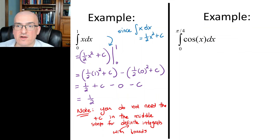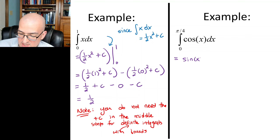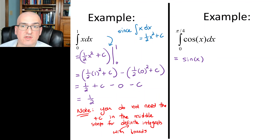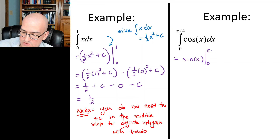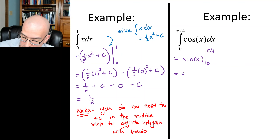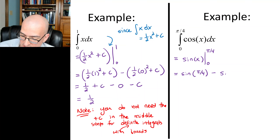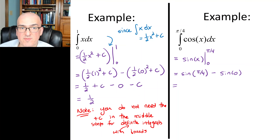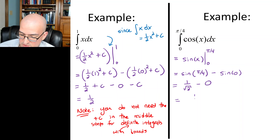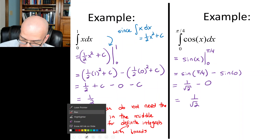Another example: the definite integral of cosine of x from 0 to pi over 4. The antiderivative of cosine of x is sine of x, evaluated from 0 to pi over 4. We get sine of pi over 4 minus sine of 0. Sine of pi over 4 is 1 over root 2 from our special triangle, and sine of 0 is 0. So we just get 1 over root 2. That's our answer.